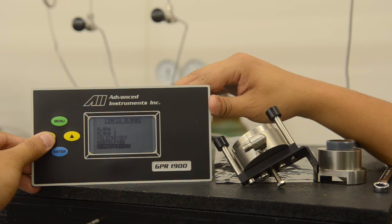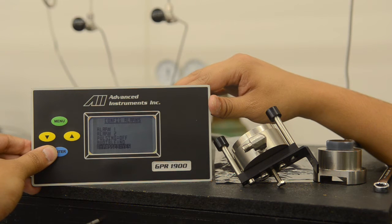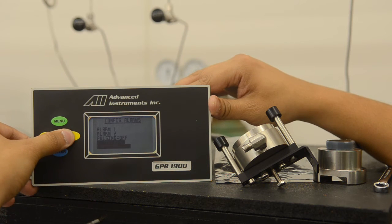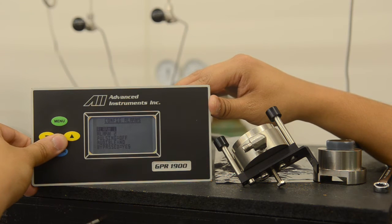We also have a bypass option. If we want both alarm one and two to be bypass, we can hit yes on that. No to allow both alarms to be enabled. Again, this is done by selecting enter.